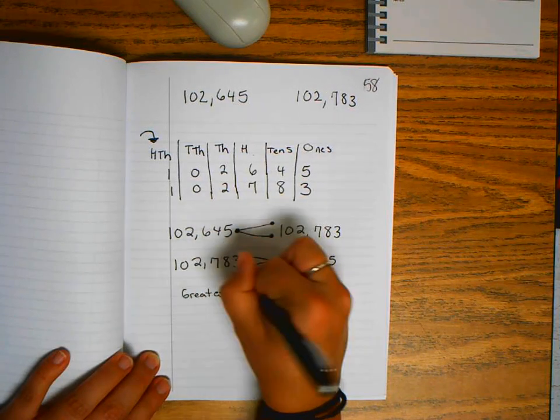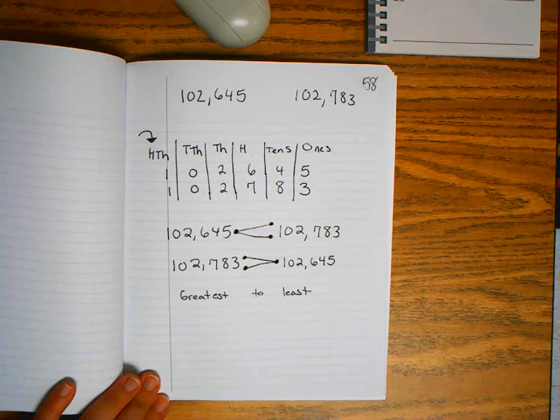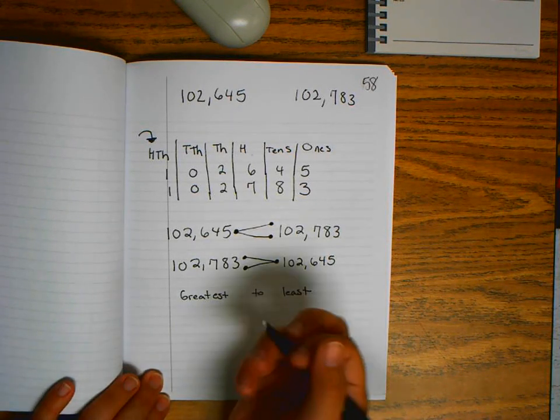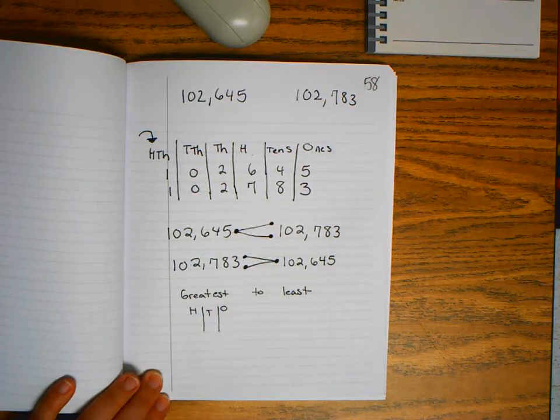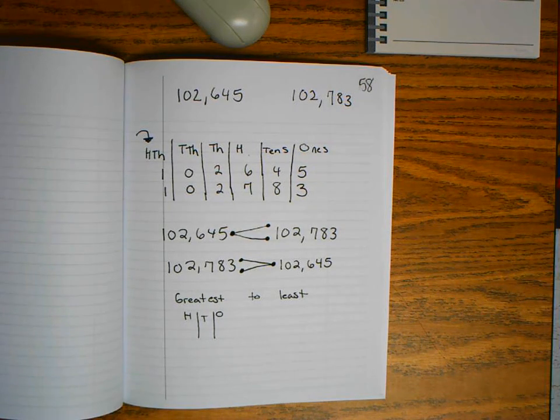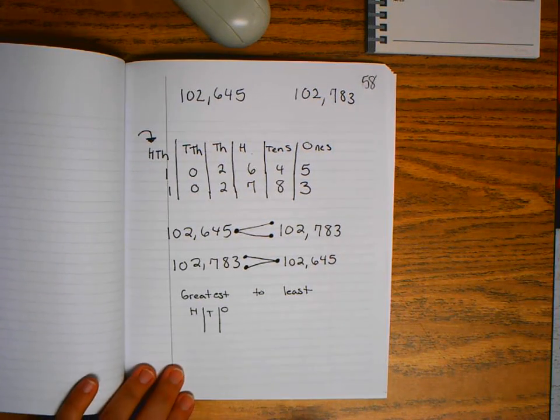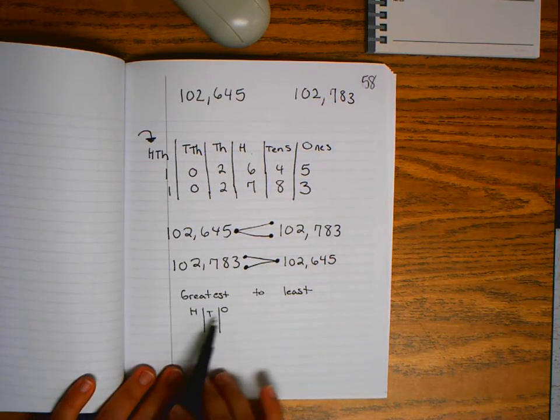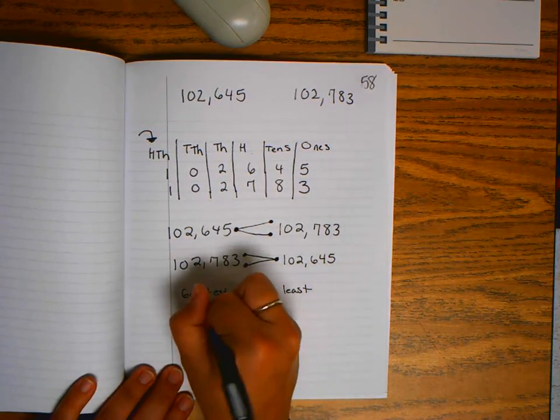Greatest to least means the numbers are in order from biggest to smallest. I'm just going to use hundreds here, but remember we can go all the way to hundred thousands, millions - the process never changes. I have my hundreds, tens, ones columns and I'm putting some numbers in.